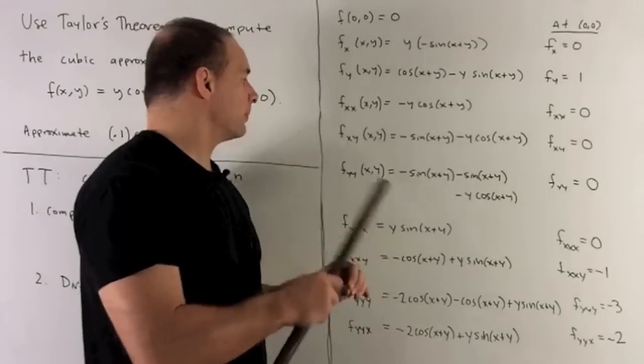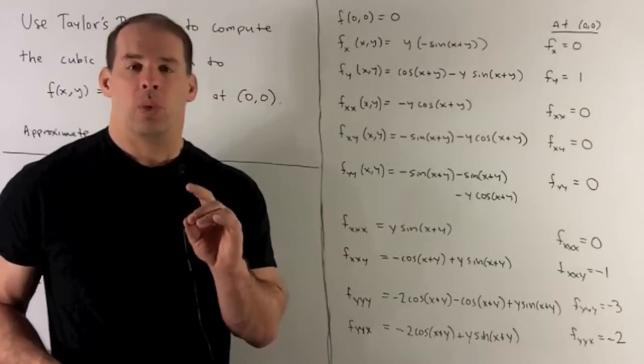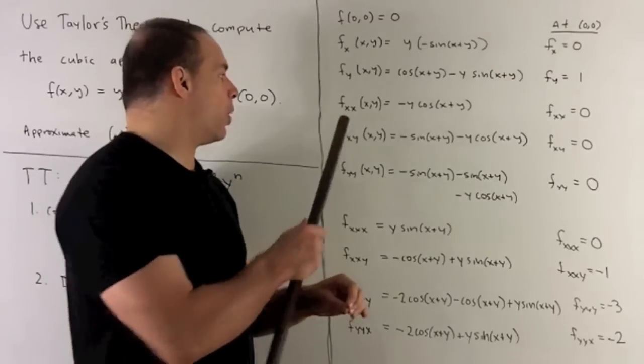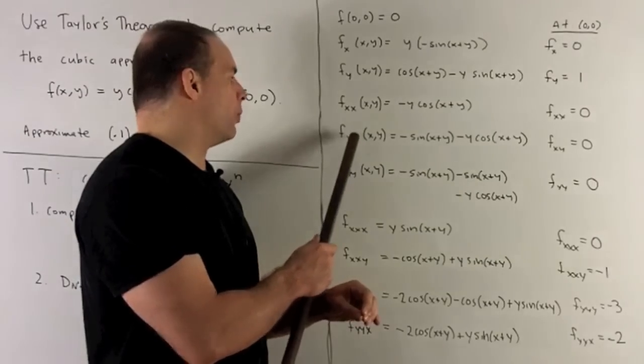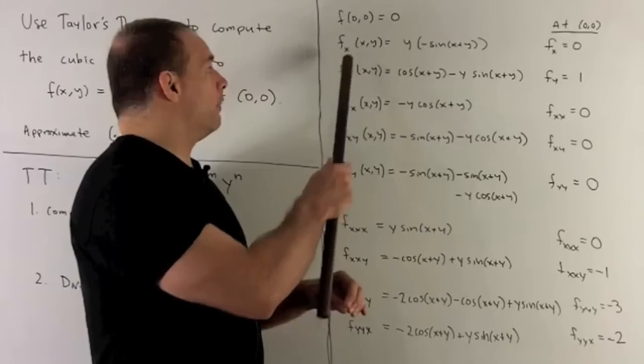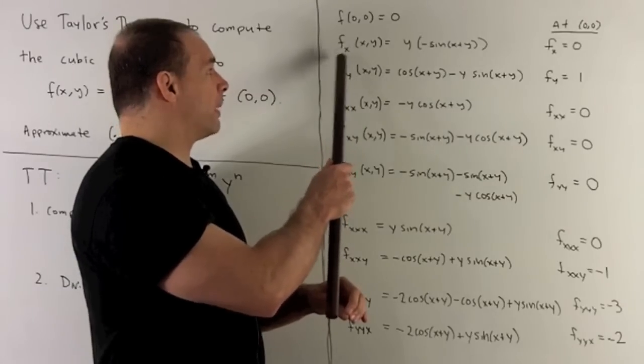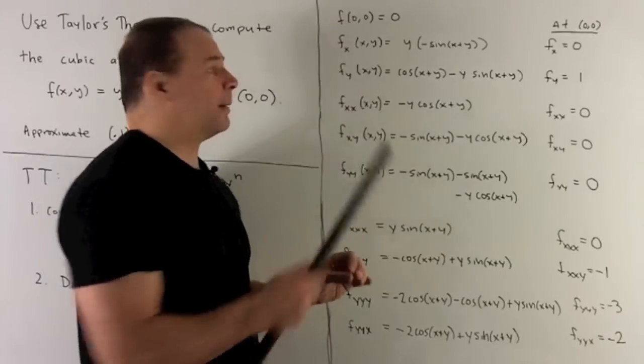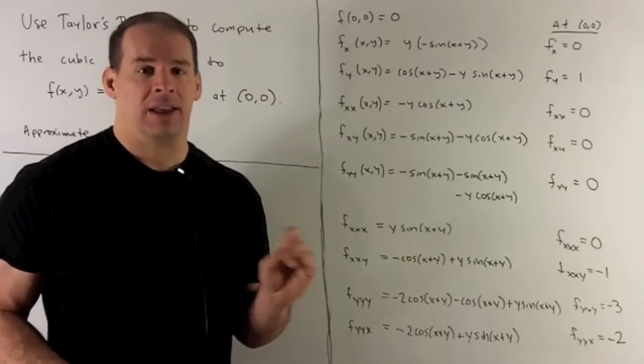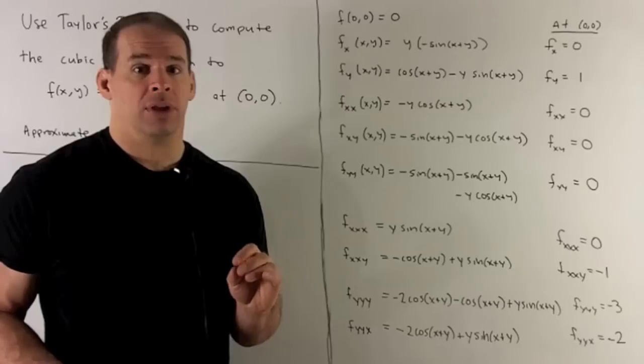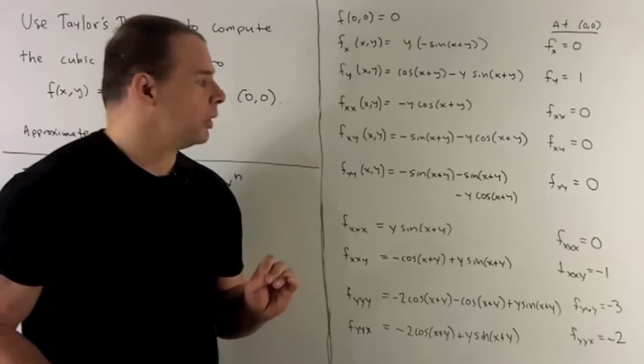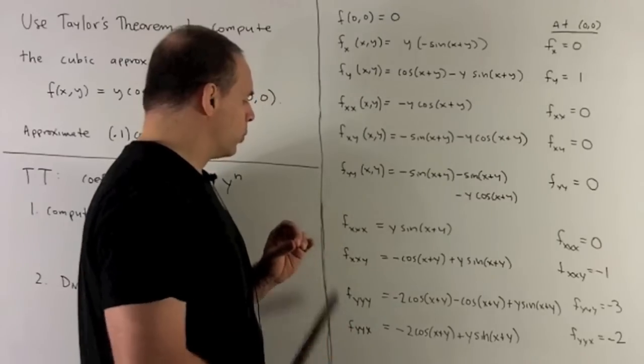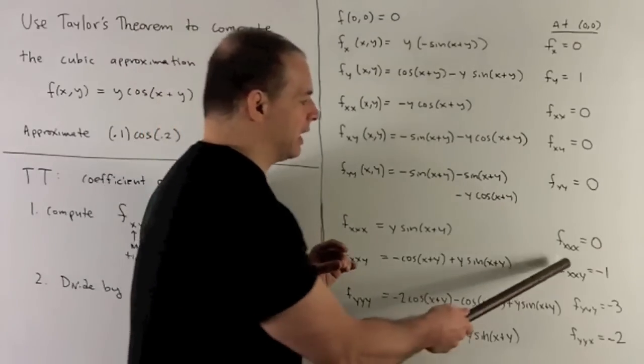We continue like this. Thing to note, whenever we do the mixed partials, it doesn't matter what order you do them in. So for instance, if I wanted partial with respect to x and then y, I could get it from partial with respect to x by hitting that with partial with respect to y, or partial with respect to y by hitting it with partial with respect to x. You get the same answer. So as I work through, we're going to get lots of zeros. And then when we get to these terms where we have three partials, we'll start getting something interesting.